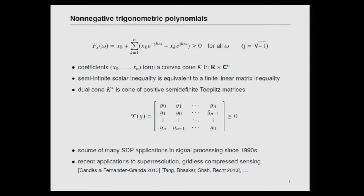A trigonometric polynomial of degree n is defined as a polynomial in the complex exponentials. The constraint is that this trigonometric polynomial should be non-negative for all frequencies. This is a convex cone in the coefficients of the polynomial, and it is one of the simplest non-negative polynomials that can be characterized by a sum of squares theorem.